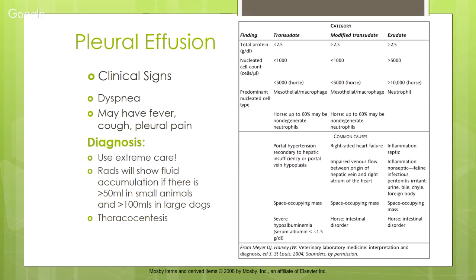Clinical signs of pleural effusion include difficulty breathing, fever, cough, and pleural pain. We must be very careful — a stressed animal that's already having trouble breathing will worsen if forced into x-ray positions. We can only detect fluid on x-ray if there's more than 50 mL in small animals or more than 100 mL in large dogs. Thoracocentesis — inserting a needle or IV catheter into the thoracic space — allows us to drain the fluid.